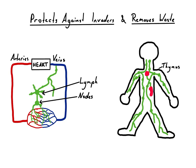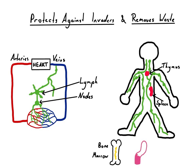But this is not all the lymphatic system does for the immune system. As well as lymph nodes, the lymphatic system includes a few other lymphoid tissues. These are the bone marrow, the thymus, the spleen, the adenoids and tonsils, the appendix — which is not in fact useless — and Peyer's patches, which you can find in your intestines.